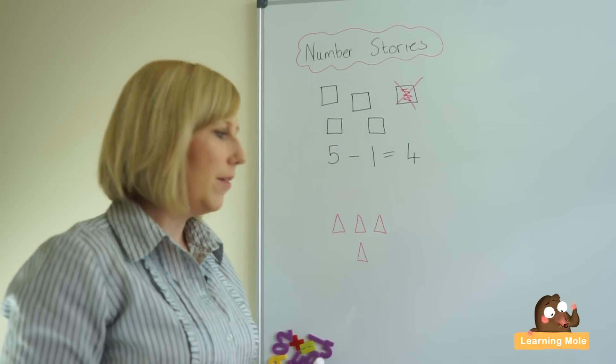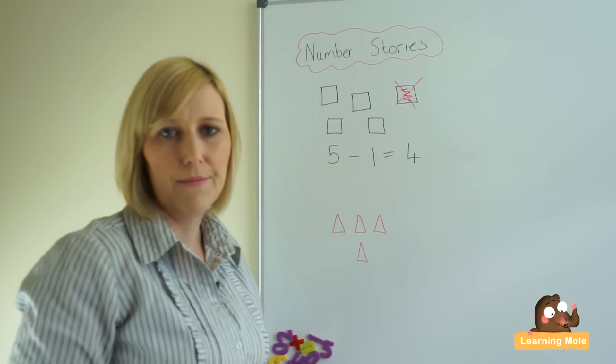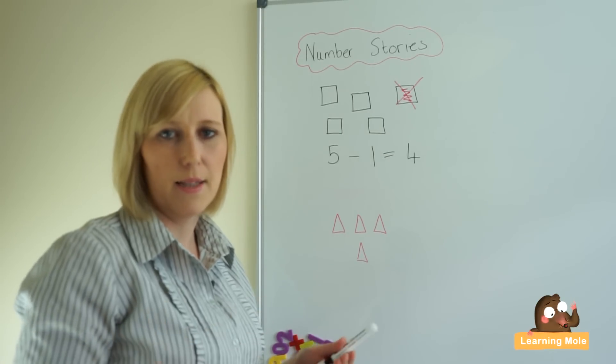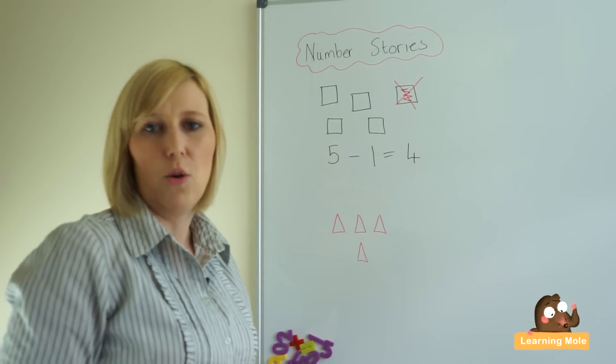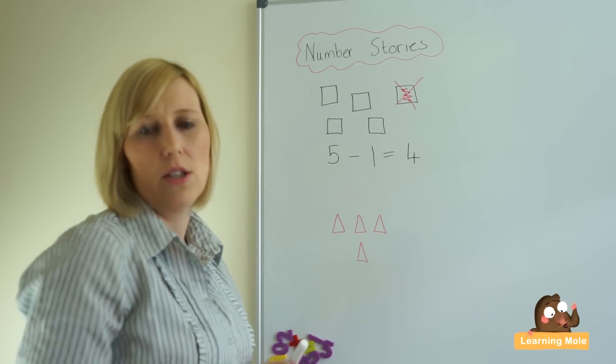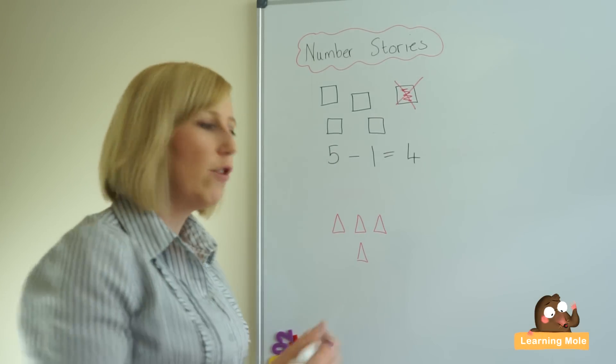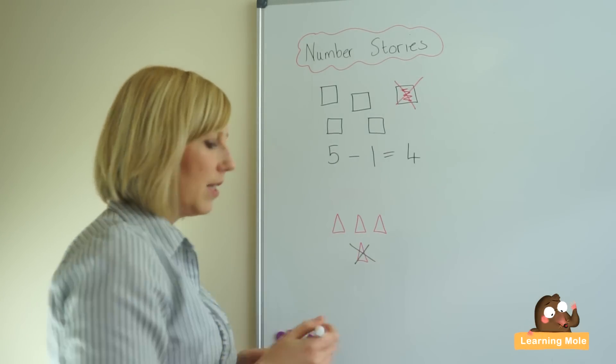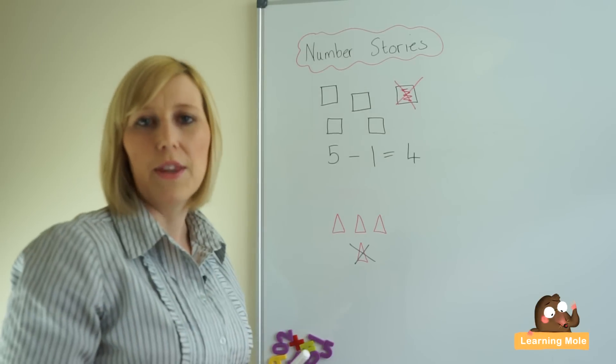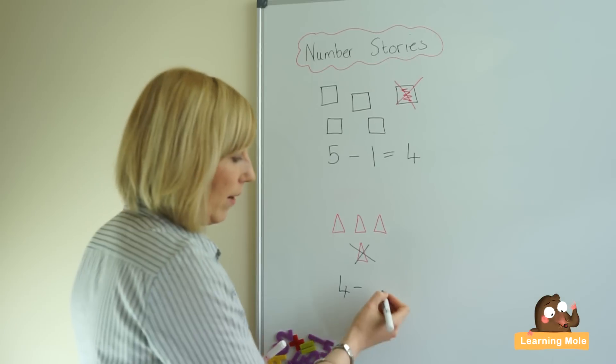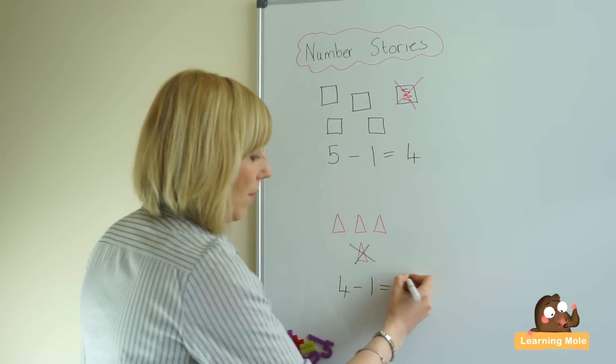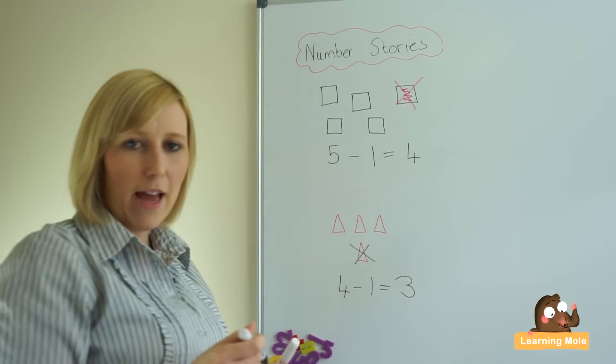People are going to go and climb them because mountains are very high. But one falls down, has a big landslide, and it disappears. So one disappears, how many are going to be left? And again, encouraging your child to actively cross out one of those mountains, and then record that number sentence and say, well, there were four to begin with, we took away one, it fell down, and we had three left.